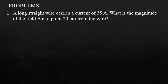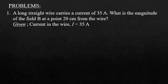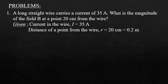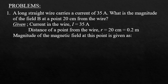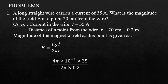Consider a long straight wire carrying a current of 35 A. What is the magnitude of magnetic field B at a point 20 cm from the wire? Given: current I = 35 A, distance R = 20 cm = 0.2 m. Using B = µ0 I / 2πR = (4π × 10⁻⁷ × 35) / (2π × 0.2), the magnetic field B is equal to 350 × 10⁻⁷ Tesla.